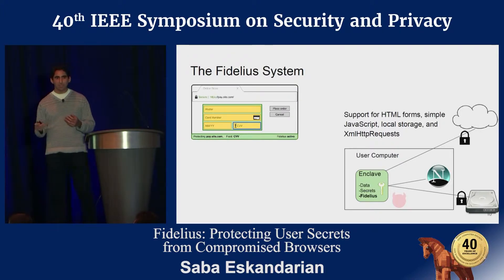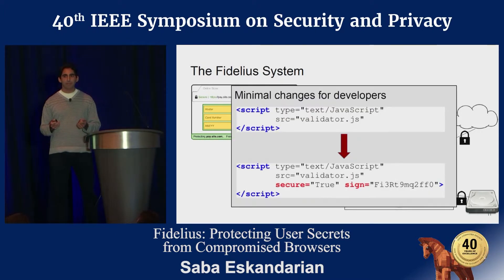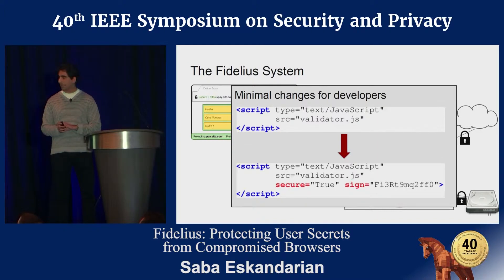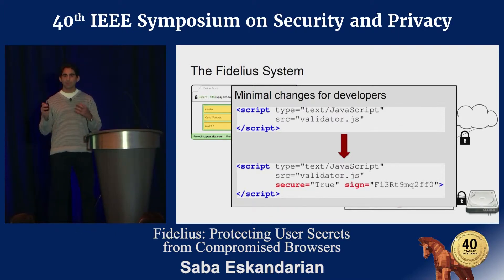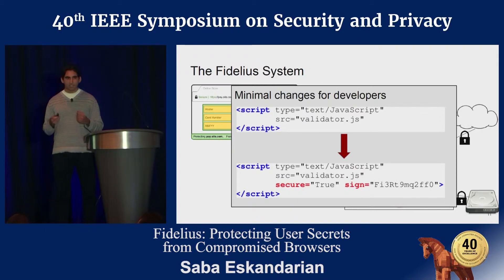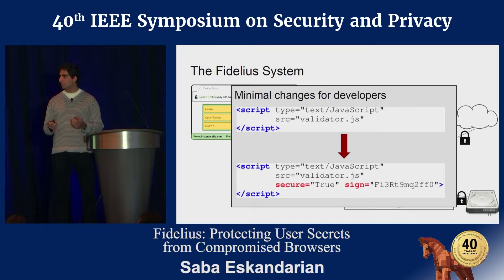An important consideration is how developers interact with the system. We wanted minimal changes to existing websites. To use Fidelius, you add a 'secure' attribute to an existing tag, indicating it will be handled inside the enclave rather than by the rest of the browser. In addition, a signature generated by the web server and verified in the enclave must be added to each sensitive tag — to prevent a compromised browser from tampering with content meant for the enclave.